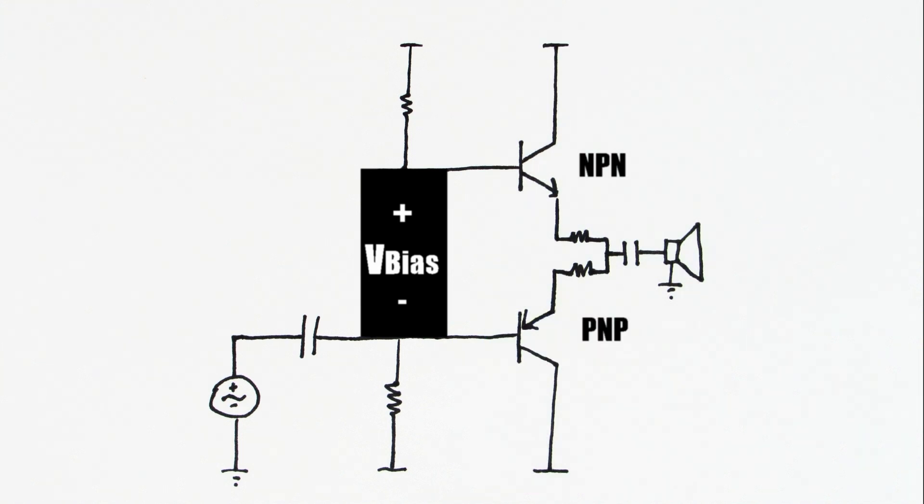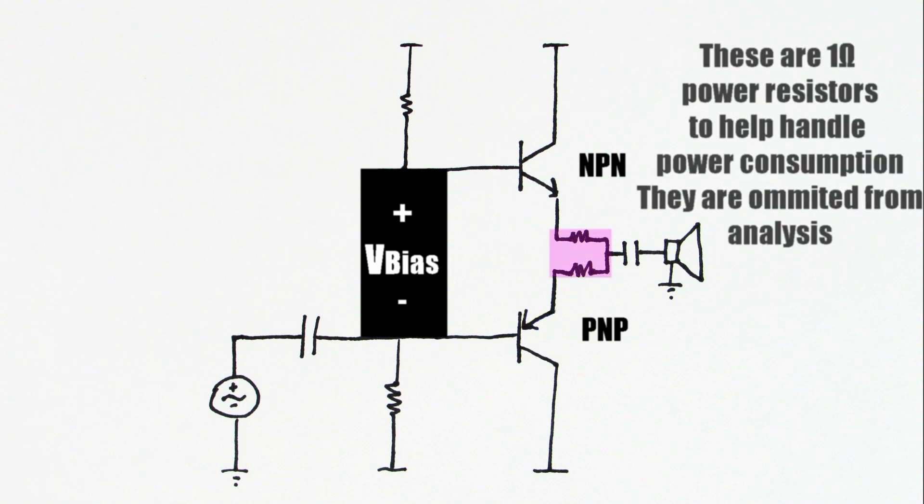As noted previously we have one NPN transistor on the top of the circuit and a PNP transistor on the bottom. These help drive the speaker load.